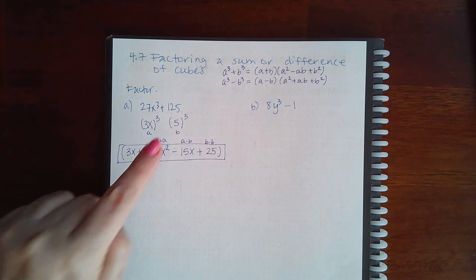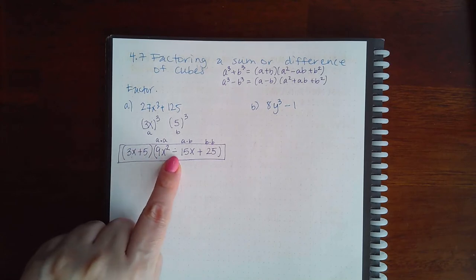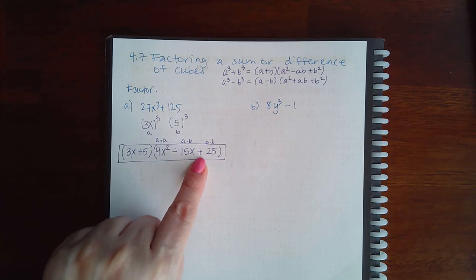So remember, whatever sign is here is going to be that first sign in the small parentheses, and then the opposite is going to be the next sign in the bigger parentheses, and then the last sign is always going to be plus.